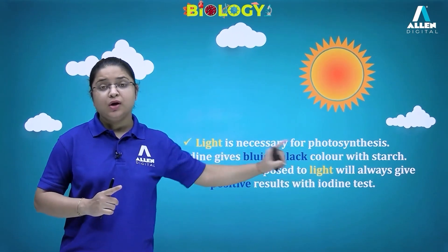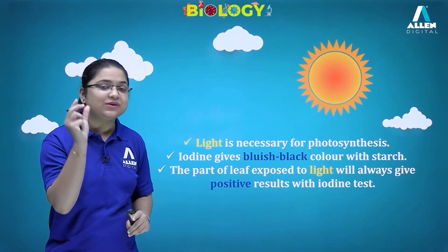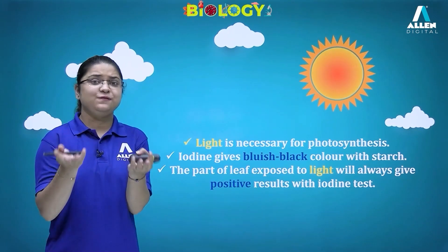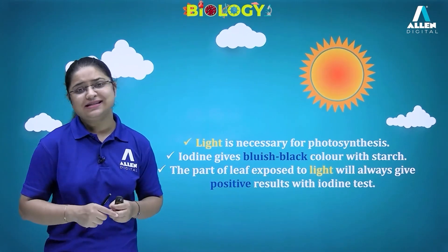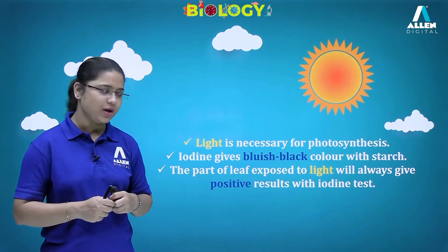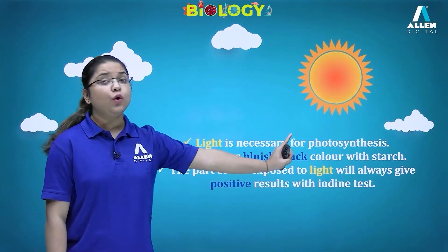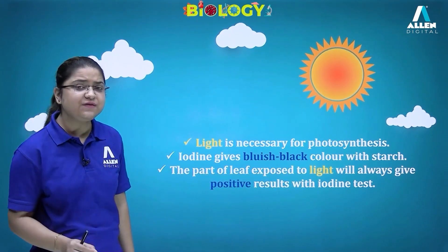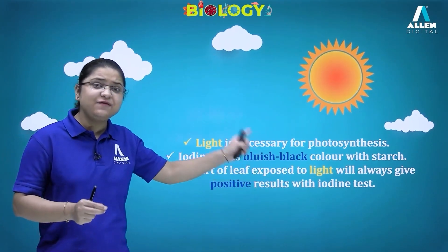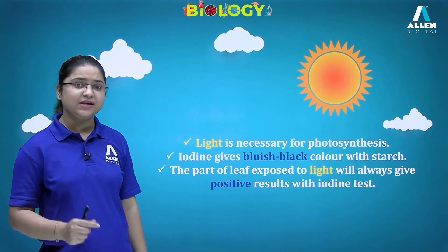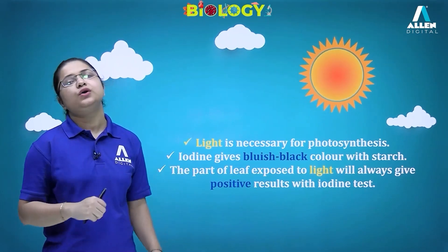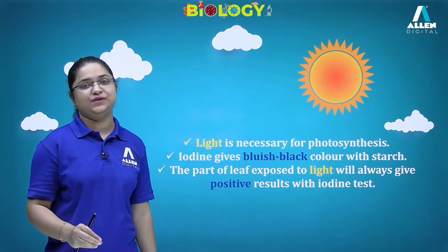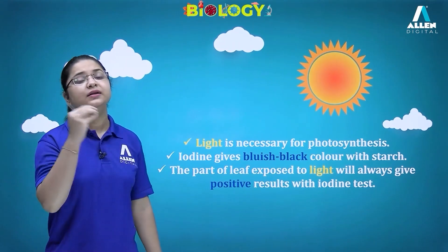If iodine gives a bluish-black color with starch, we say photosynthesis has taken place. We can pluck a leaf, put iodine solution on it, and find out. The part of the leaf exposed to light will always give positive results — a bluish-black color — whereas the covered portion won't give the positive test.